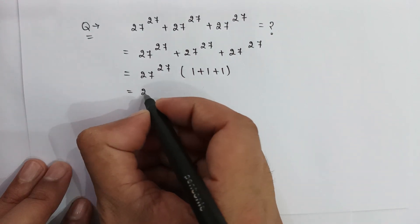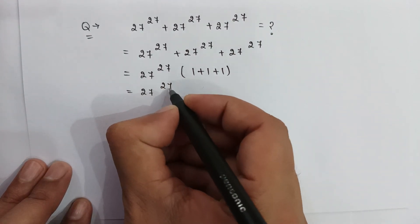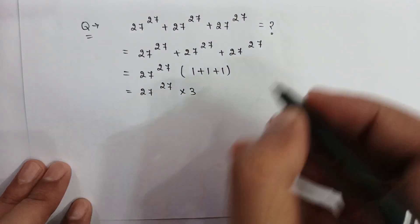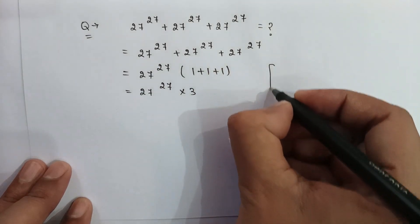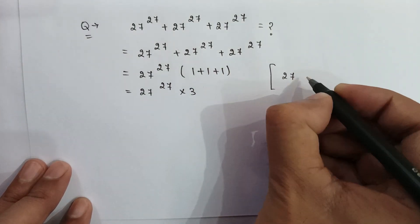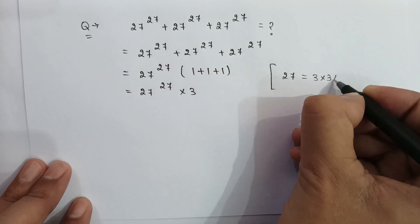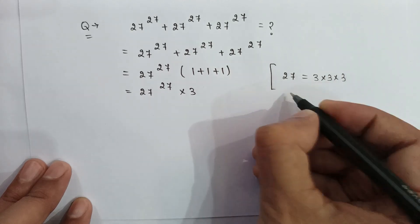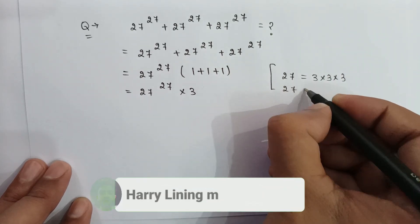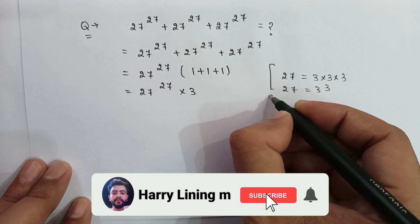So it will be 27 to the power 27 multiplied by 3. As we know that 27 can be written as 3 multiplied by 3 multiplied by 3, and it can be written as 3 to the power 3.